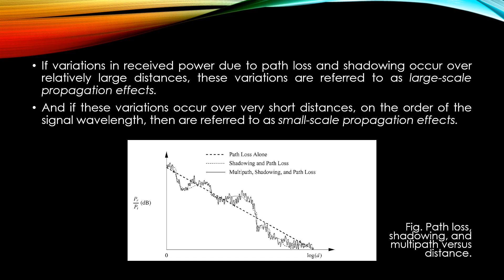If the variations in the received power due to path loss and shadowing occur over relatively large distances, then variations are referred to as large scale propagation effects. And if these variations occur over very short distances on the order of the signal wavelength, then they are referred to as small scale propagation effects.